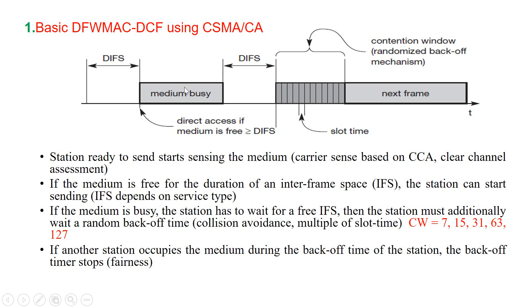The additional waiting time is measured in multiples of slot times. This randomly distributed delay helps avoid collisions — otherwise all stations would try to transfer data simultaneously after the medium becomes idle again. However, this mechanism is not entirely fair: independent of how long a node has already waited, each node has the same chance for transferring data in the next cycle.